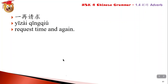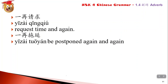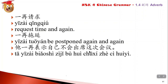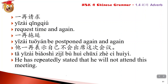More uses of 一再: 一再请求 means 'to request again and again.' 一再拖延 means 'to delay or postpone repeatedly.' 她一再表示自己不会出席这次会议 - she expressed many times that she will not attend this meeting. 出席 means 'to attend or be present.'